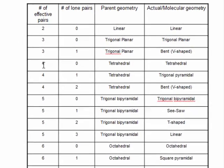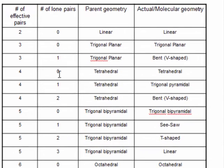So you see that four, the number of effective pairs is four. The number of lone pairs is zero. So the parent geometry of CH4 is tetrahedral. And because it has no lone pairs, the actual and molecular geometry is also tetrahedral.